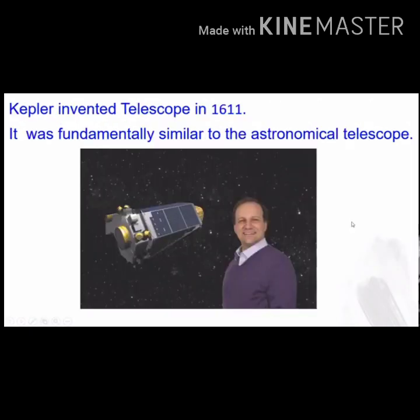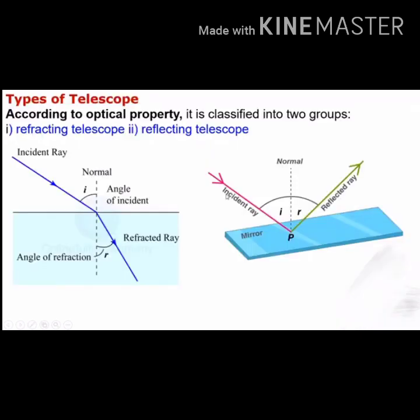Kepler invented a telescope in 1611 which was fundamentally similar to the astronomical telescope. Next, we are going to see about the types of telescopes. According to the optical property, telescopes are classified into two groups: first is the refracting telescope, and second is the reflecting telescope.